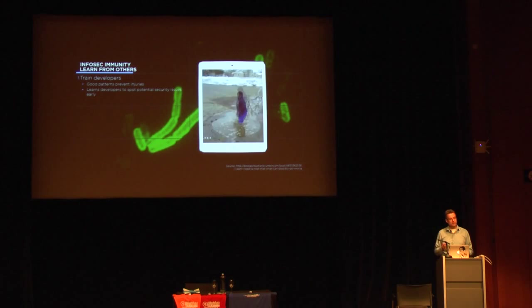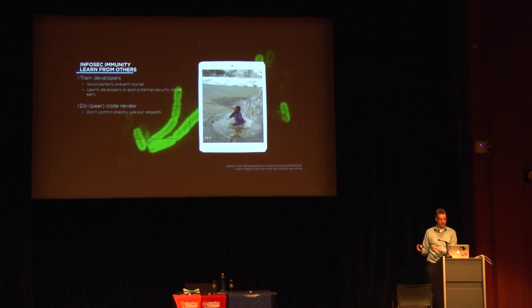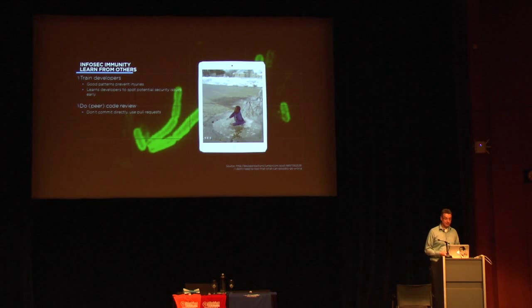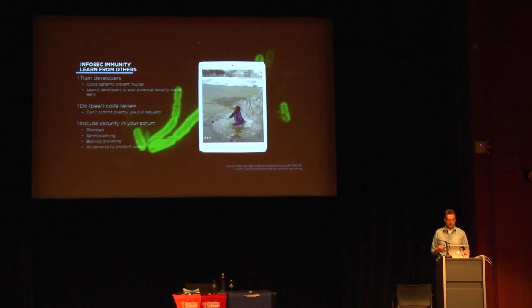We need to do more peer reviews on code — it should actually be best practice not to check in your own code. We have great experience with a model where one developer writes the code, creates a pull request, and that pull request is pulled in by another developer who does a review. Not all application developers are security people — I'd like to get there but I'm pessimistic we ever will, since I know I'm not a great programmer. If I can't be a proper front-end developer I can't expect a front-end developer to be a true security specialist.